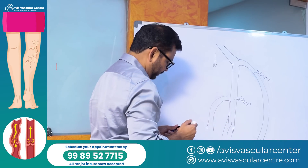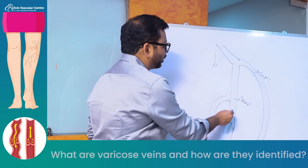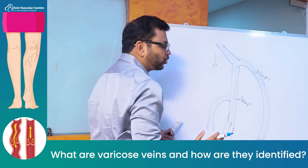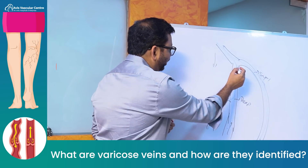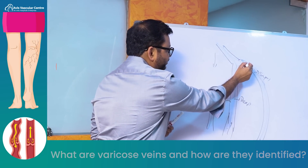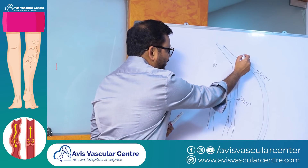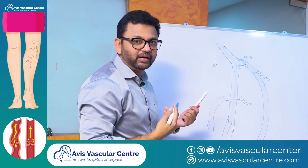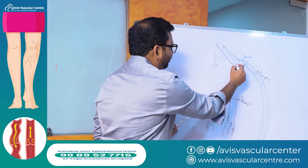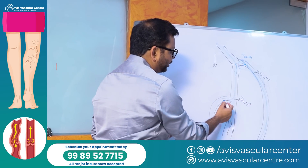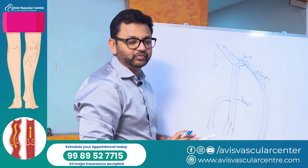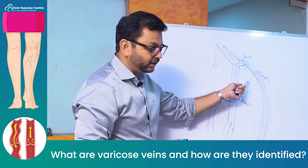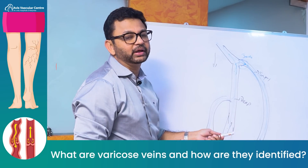Blood needs to go up to the heart. There are guarding valves at the junction between the superficial and deep vein. If for whatever reason this valve does not work properly, blood instead of going up will come back down and reaccumulate in your legs. Simply speaking, this is varicose veins — the veins are not working properly, the valves are incompetent, therefore blood is coming back and reaccumulating in your legs.